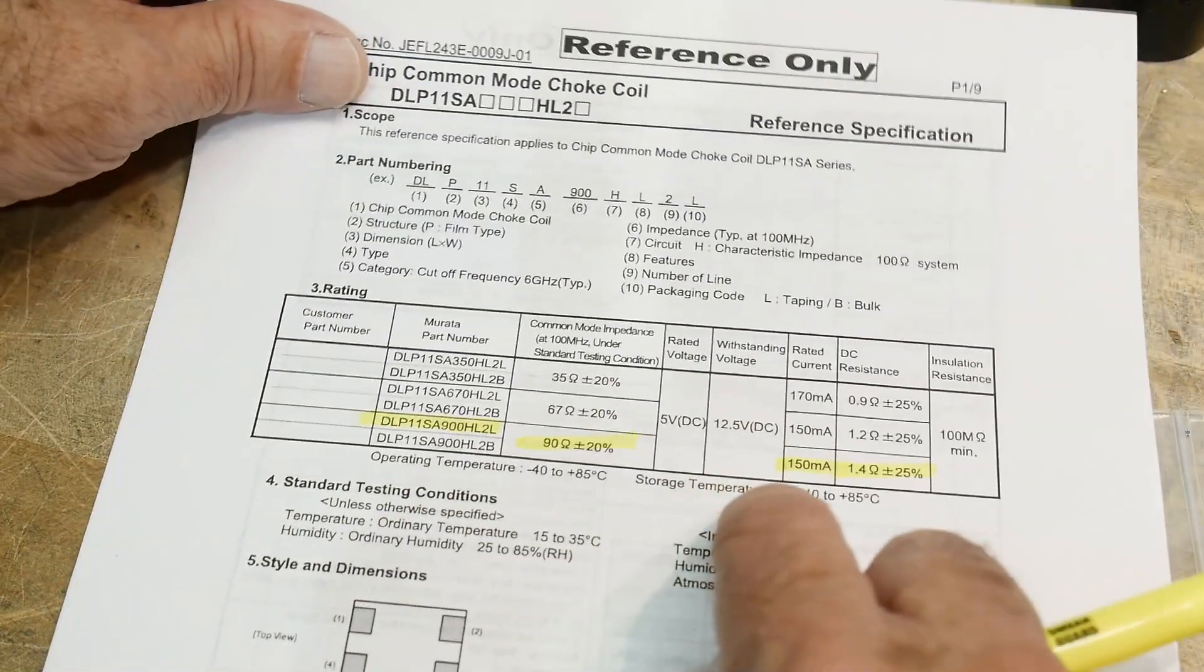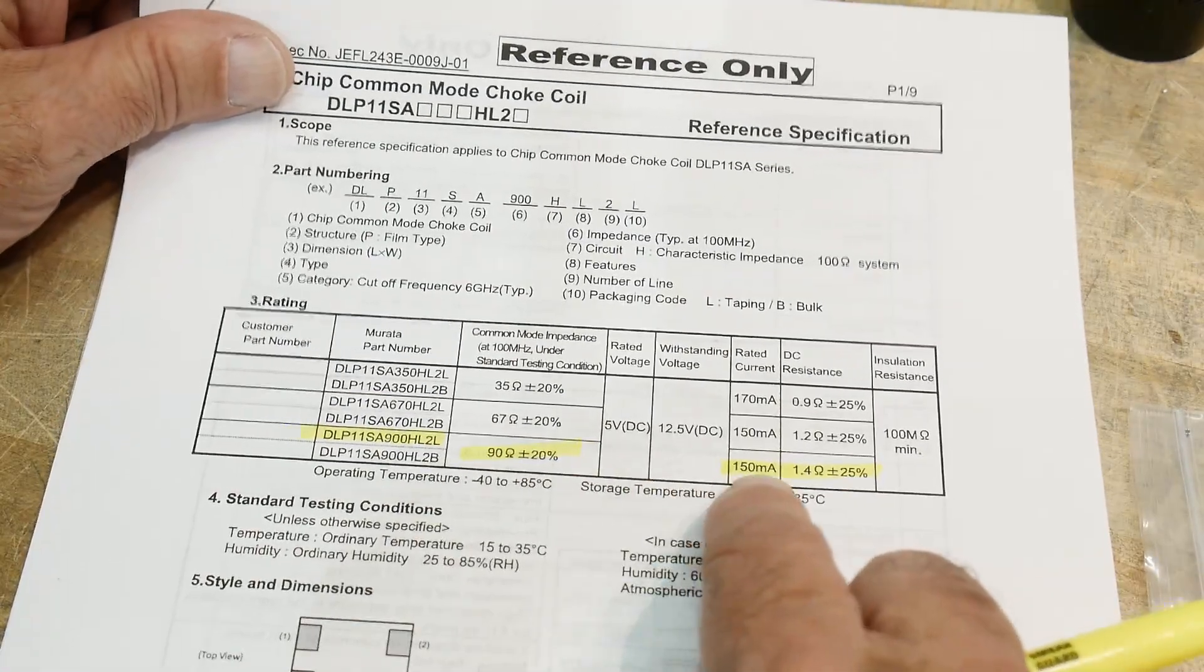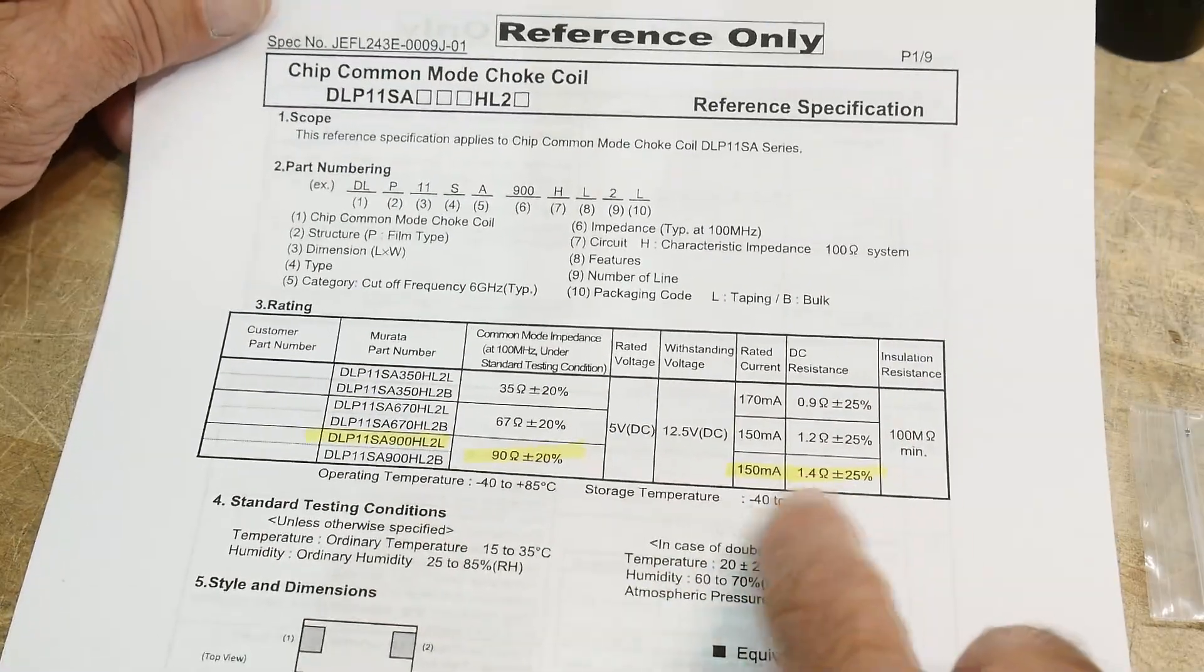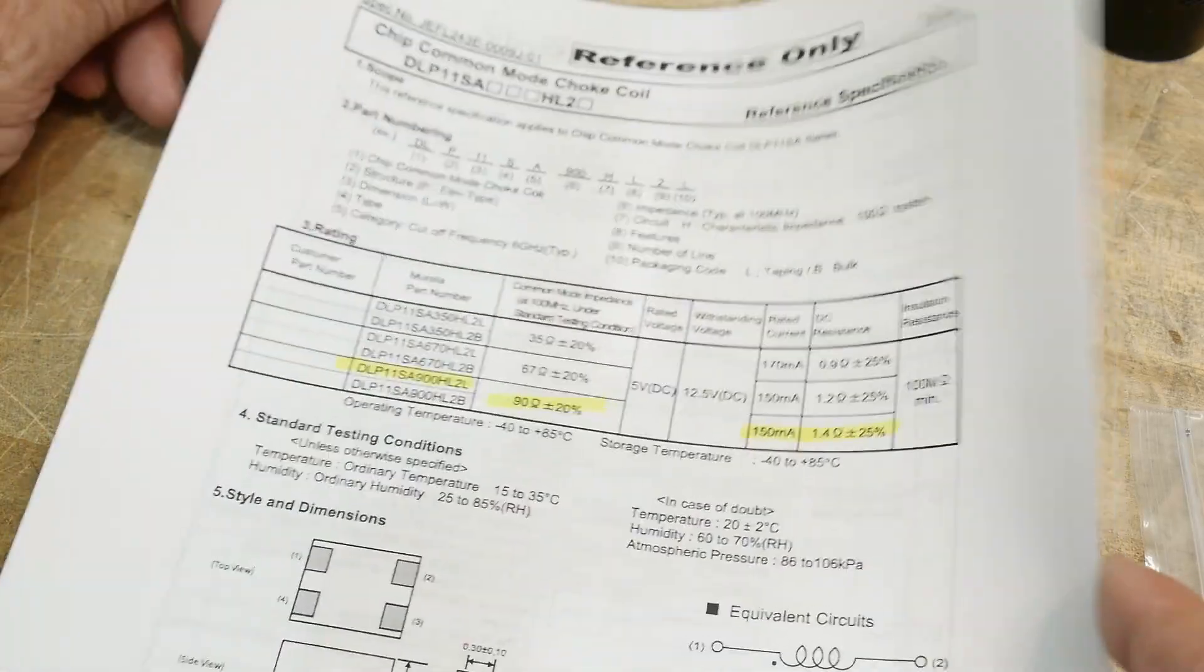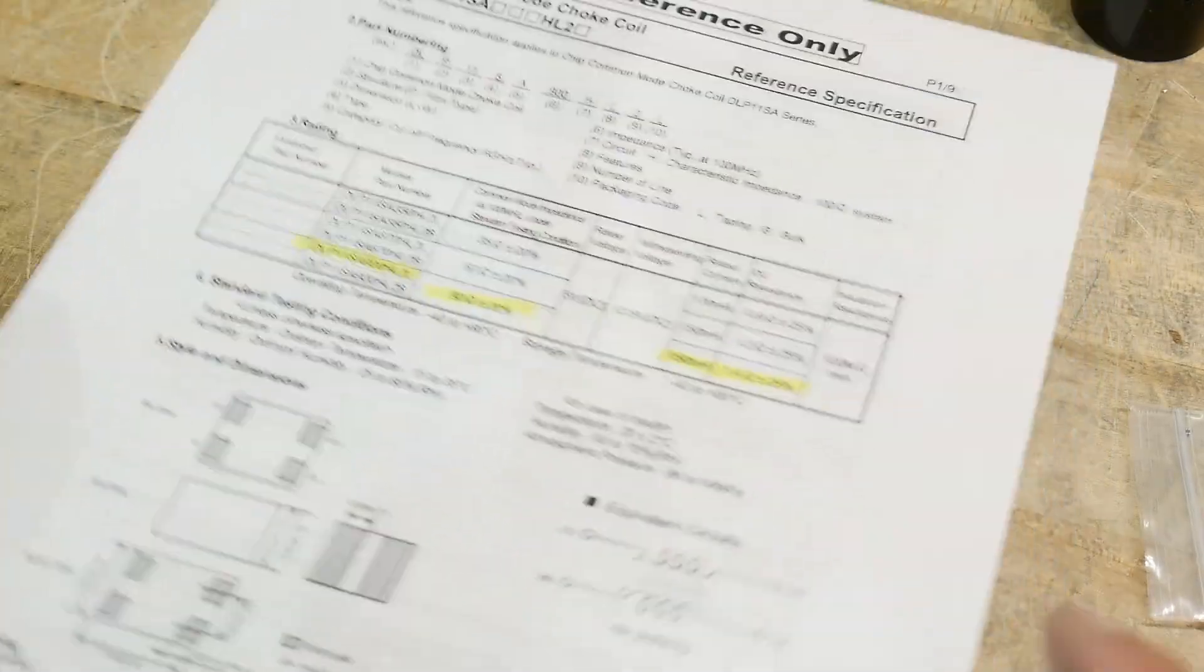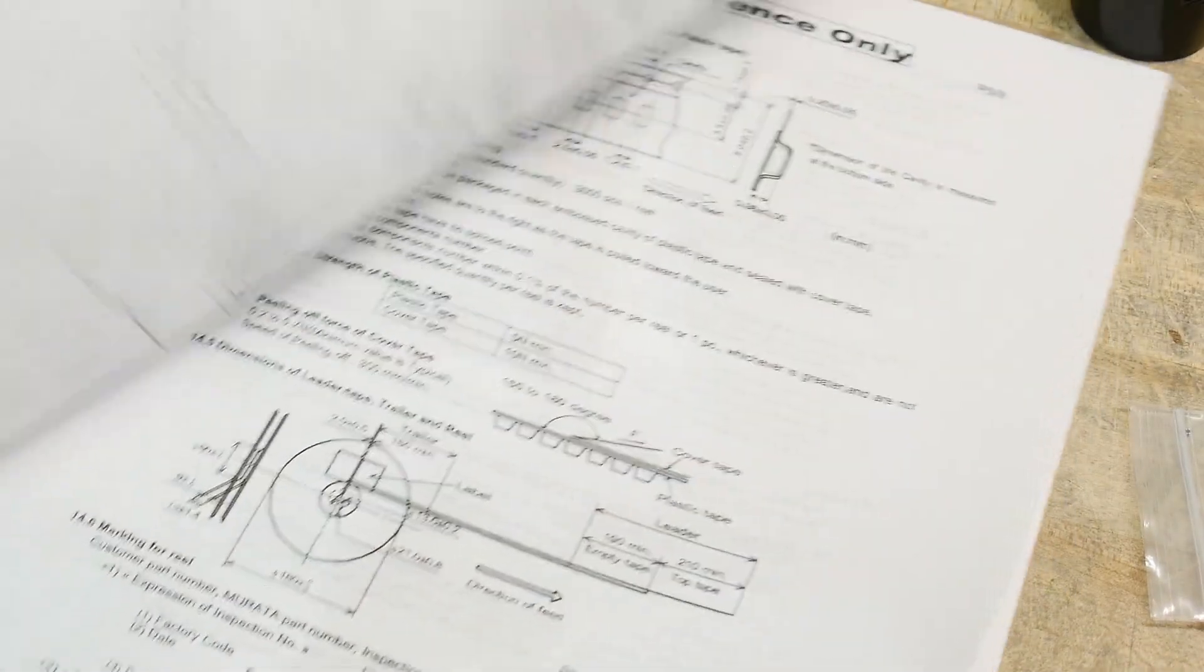At 100 megahertz, you get 90 ohms. Okay. So we should be looking for 90 ohms at 100 megahertz. And you can pass 150 milliamps through them. You get a series resistance of 1.4 ohm. So yeah, there you go. So they're funny little guys.